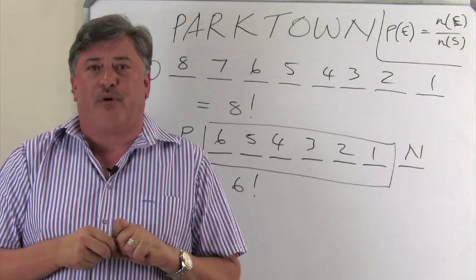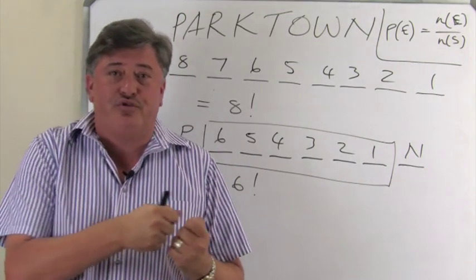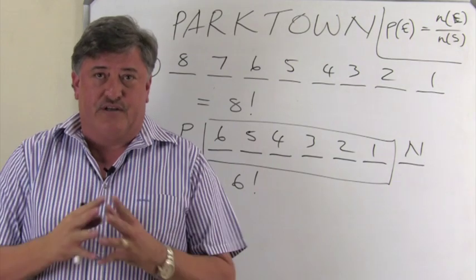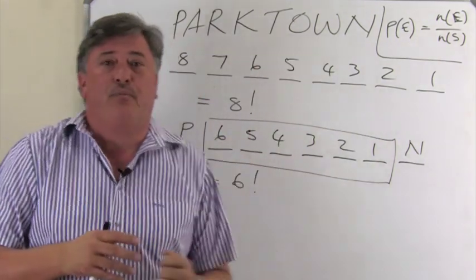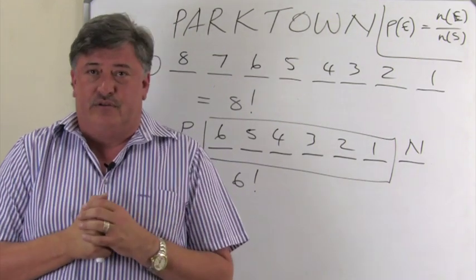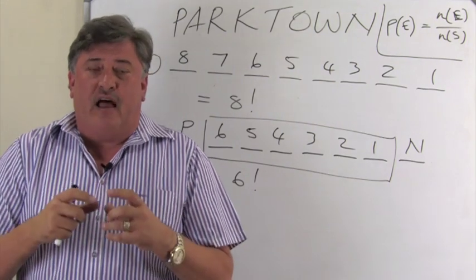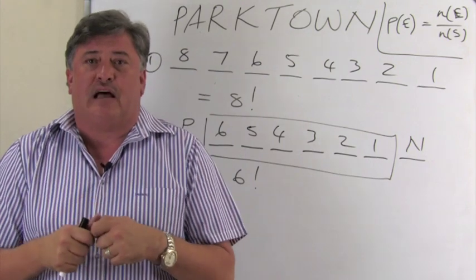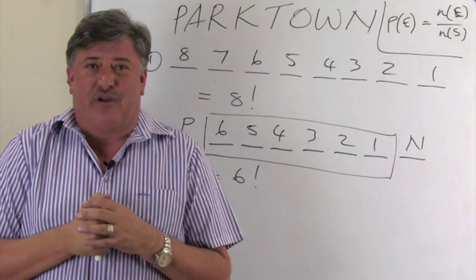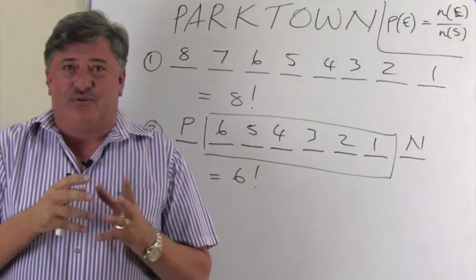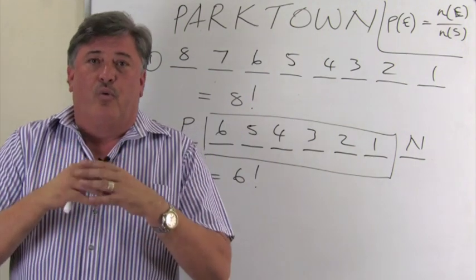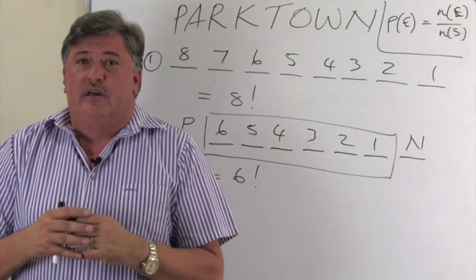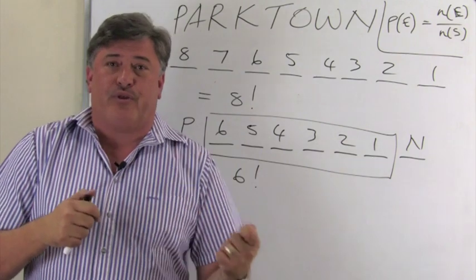Now, I'm going to bring in probability into the counting principle. And I'm going to show you how we use the counting principle to answer probability questions. So, I'm asking you, we built eight-letter words using the eight letters from the word Parktown. They are not allowed to be repeated. These letters can't repeat. If I select randomly one of these words, what is the probability that word will start with a P and end with an N? So, can you see why I discussed these with you? It's to assist you on this probability question. So, we built eight-letter words using the letters from the word Parktown only once. How many? Eight factorial. If I select a word randomly, what is the probability it will start with a P and end with an N?